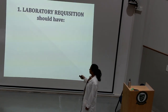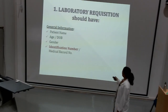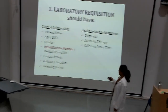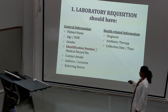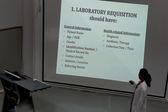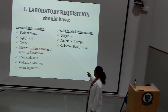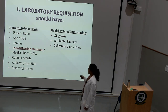When you receive a request for laboratory analysis, the laboratory request form should contain general information and health-related information. Under general information, it must contain the patient name, age or date of birth, gender, and identification number — it is very important that the ID number is correct because there may be many patients with the same name. You also need the contact details, the referring doctor, the provisional diagnosis, whether the patient is undergoing any treatment or antibiotic treatment specifically, and the collection date and time.